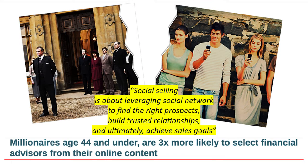A quick revisit of social selling and the millennial generation. The reason why we're focusing on millennials is because this generation is particularly different from any previous generation. Millennials are three times more likely to select financial advisors from their online content. Social selling is about leveraging social networks to do two things: one, to find the right prospect — there's a discovery step — and two, to build trusted relationships. Once you do those two things, the outcome is to achieve sales goals.